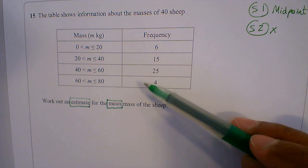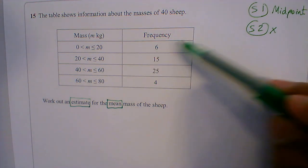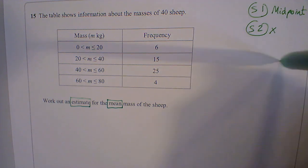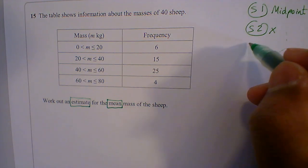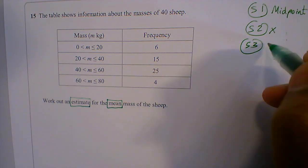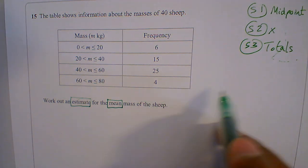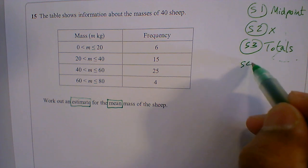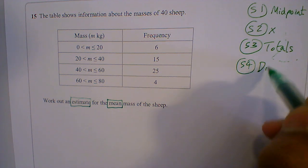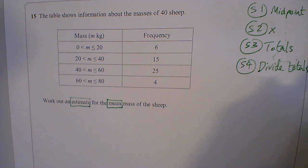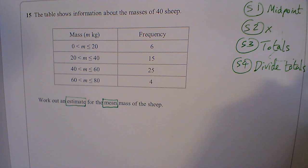Then step 3 is we find the total from what we multiplied and we find the total for the frequency. So step 3 is we find the totals and then step 4 is we will be dividing the totals.